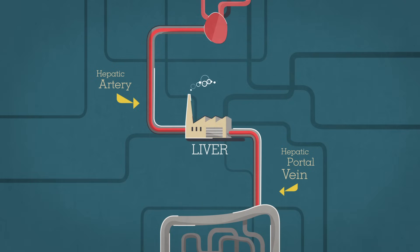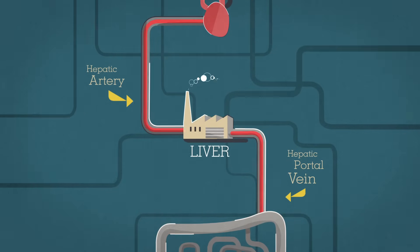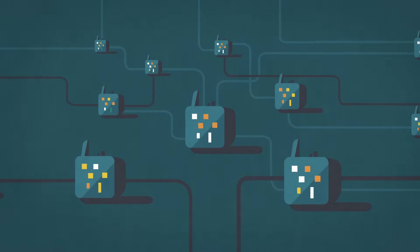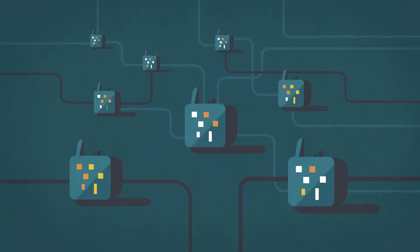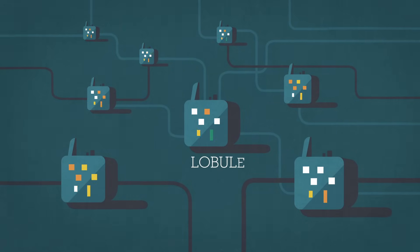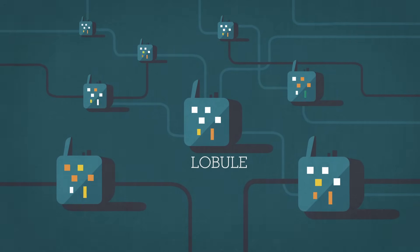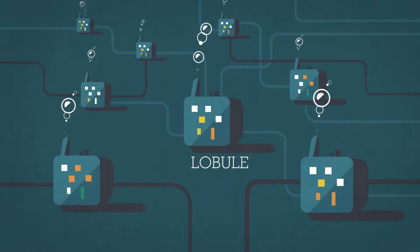This double delivery fills the liver with nutrients that it then sorts, processes, and stores with the help of thousands of tiny internal processing plants known as lobules. Both blood flows also deliver the oxygen that the liver needs to function.